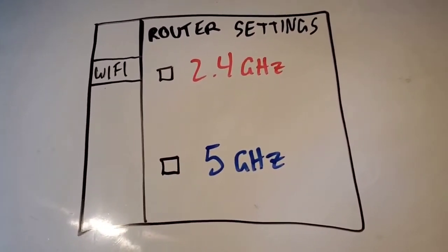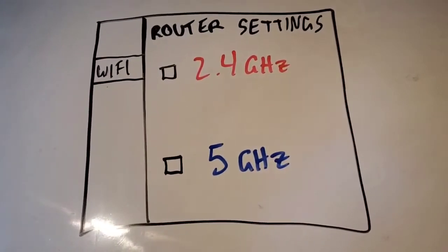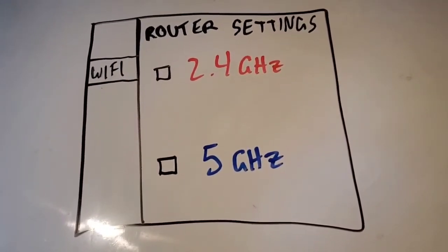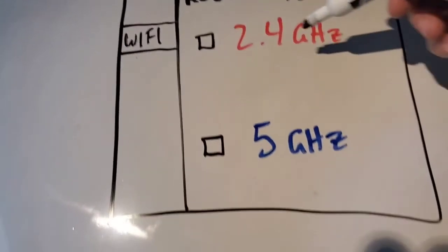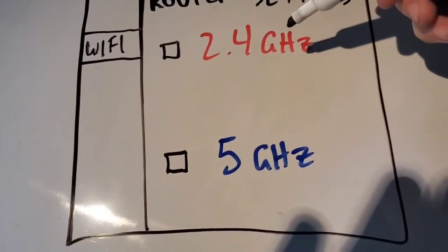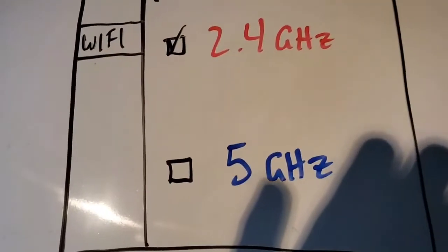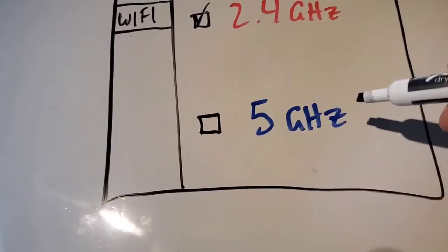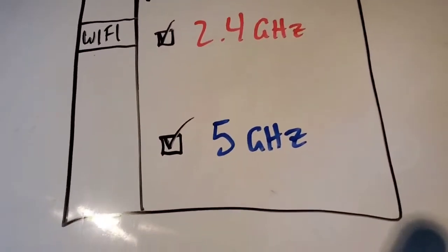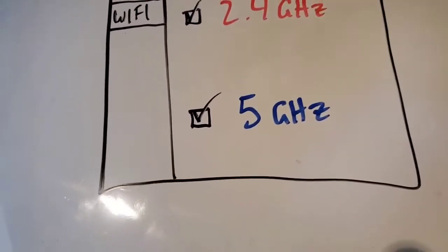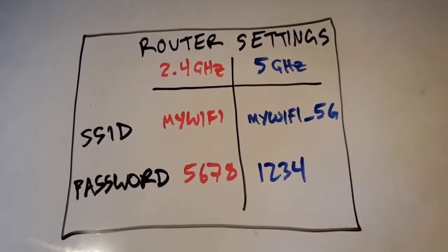Inside your router settings, it'll let you switch between networks, or if it's a simultaneous dual-band router, it'll let you enable both. You can check the box to enable the 2.4 gigahertz network, or check the box to enable the 5 gigahertz network, and it's also possible to check both and allow them to exist at the same time.